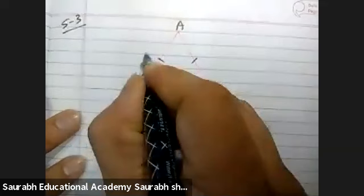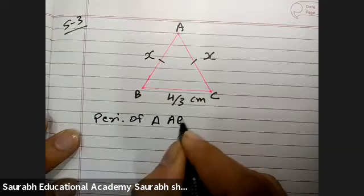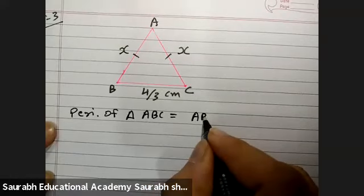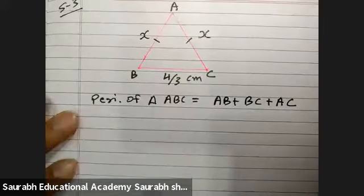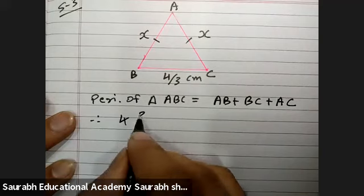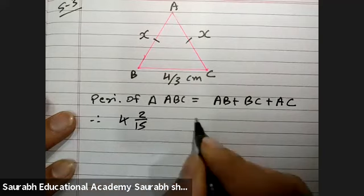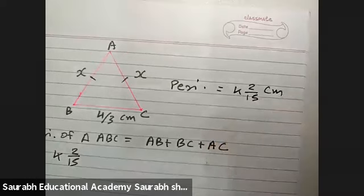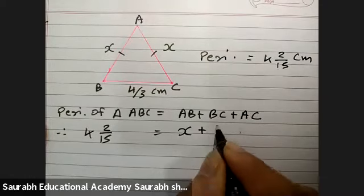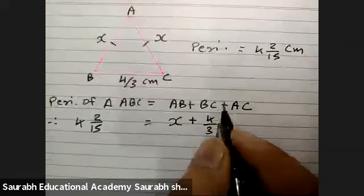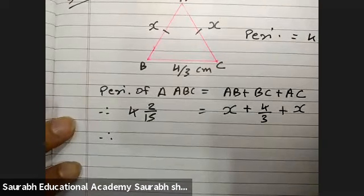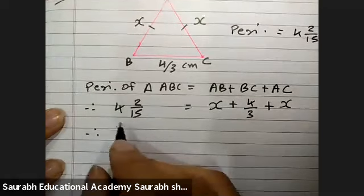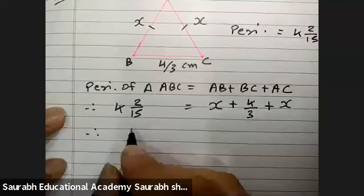Now let's assume perimeter of triangle ABC. Perimeter means sum of three sides AB, BC and AC. Perimeter is given 4 integer 2 by 15. AB we have taken X, BC 4 by 3, and AC is again X. Now let us convert them into fractions. 15 fours are 60 plus 2, 62 upon 15.